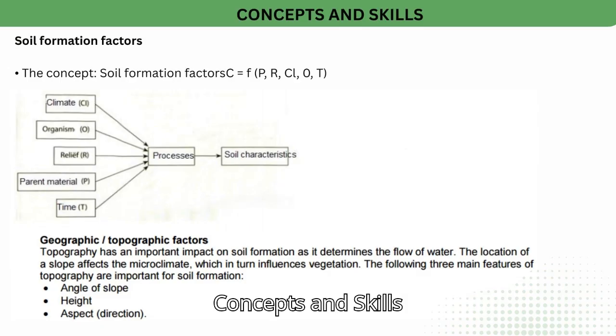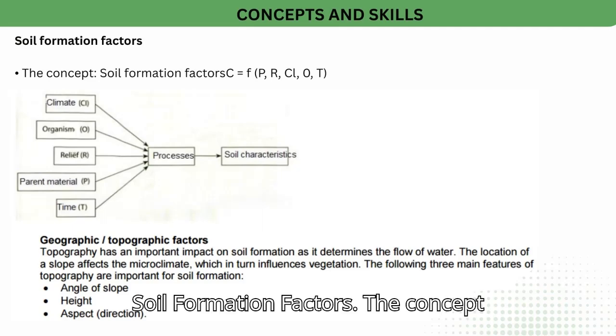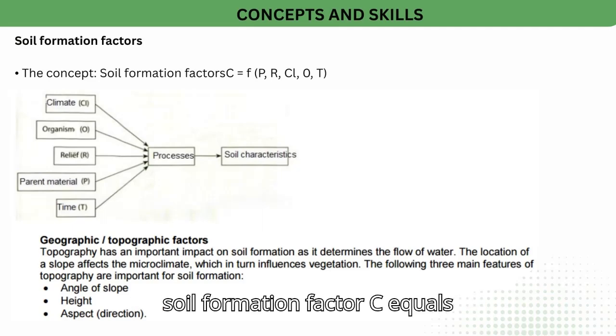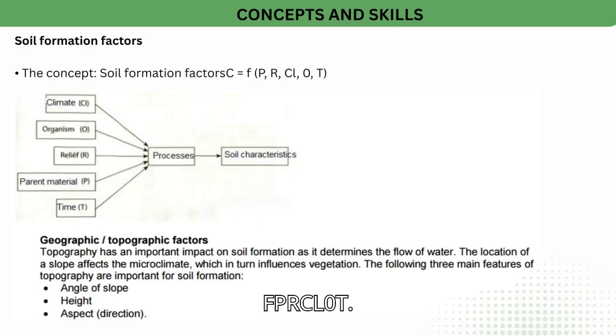Concepts and skills: Soil Formation Factors. The concept is expressed as the CLORPT formula — Soil Formation Factor equals F(C, L, O, R, P, T) — representing climate, location, organisms, relief, parent material, and time.